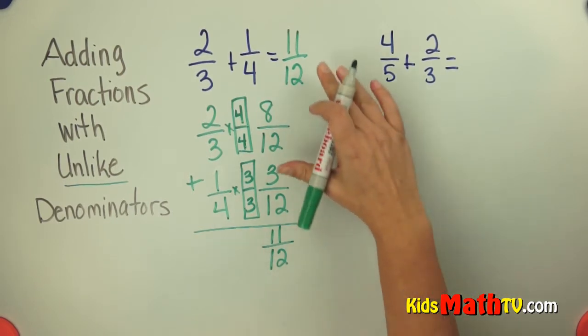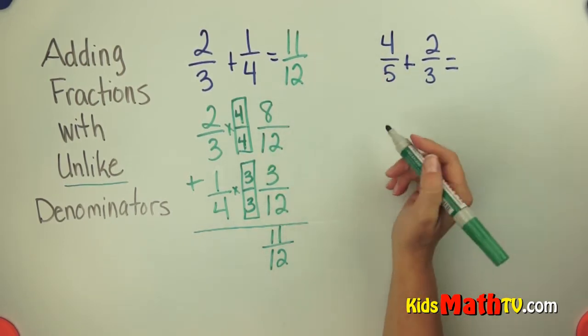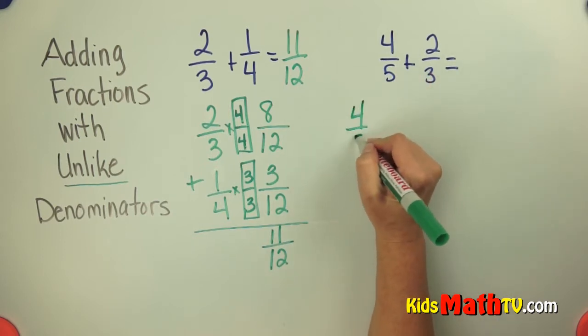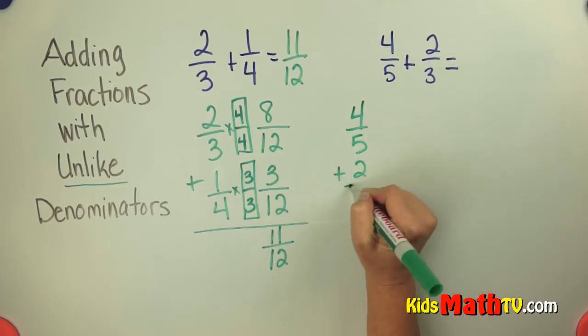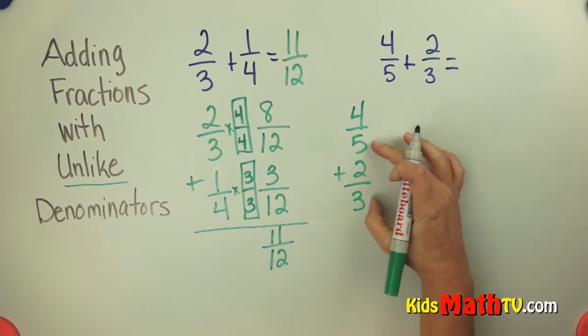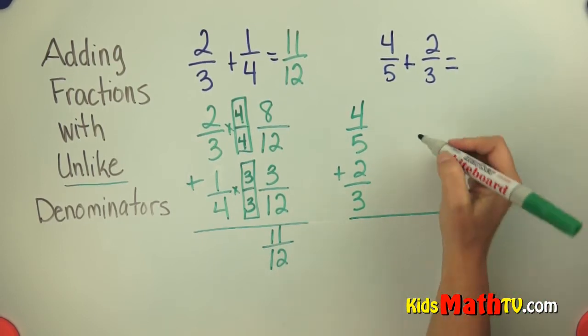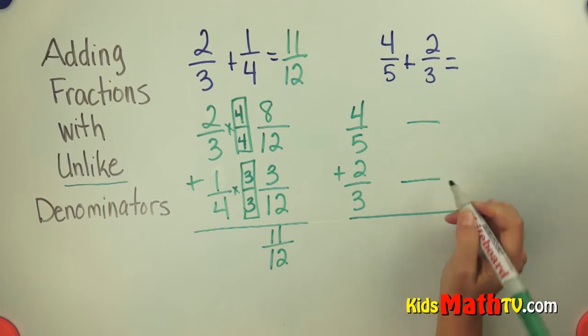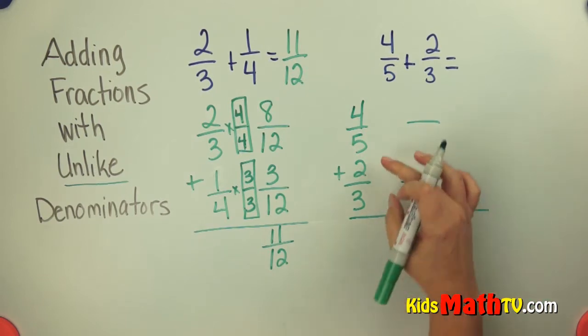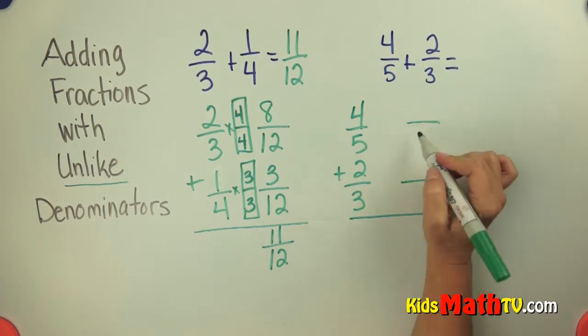Let's try, this one did not have any regrouping. Let's try one that needs regrouping. So we have 4 fifths plus 2 thirds. Again, I need a common denominator. So I need to decide on a denominator. I'm going to go ahead and use 15. 15 is a multiple of both.